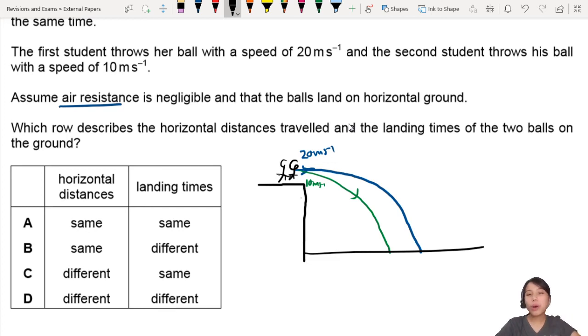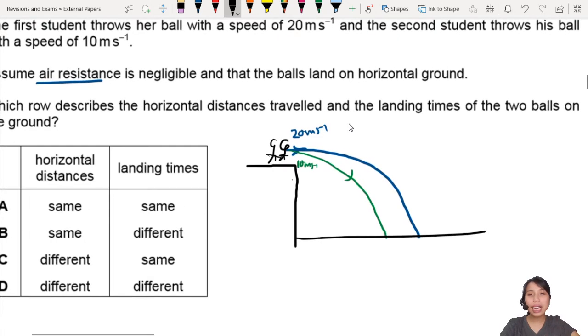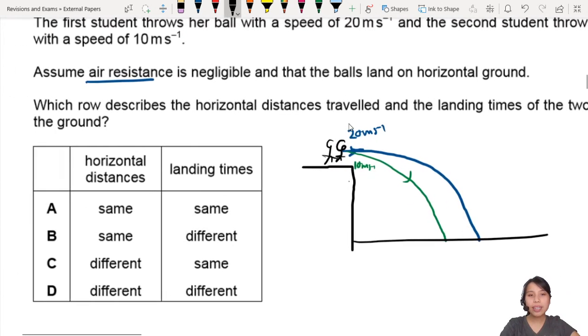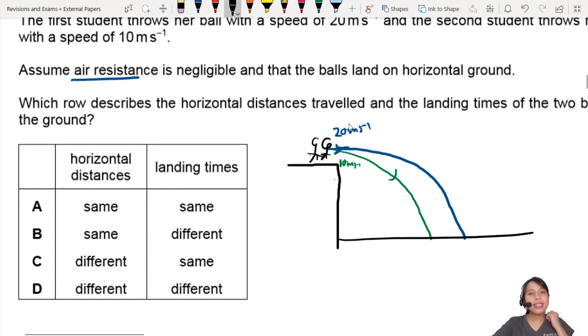So which row describes the horizontal distance travel and the landing times of the two balls on the ground? This is a very important key idea for projectiles. Horizontal distance is affected by what?